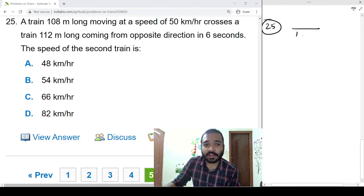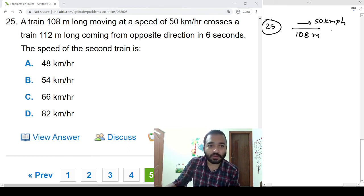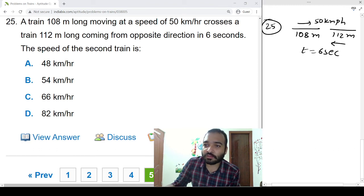A train 108 meters long moving at speed 50 kmph crosses a train 112 meters long coming from opposite direction in 6 seconds. What is the speed of the second train? We need to find out the speed of the second train.